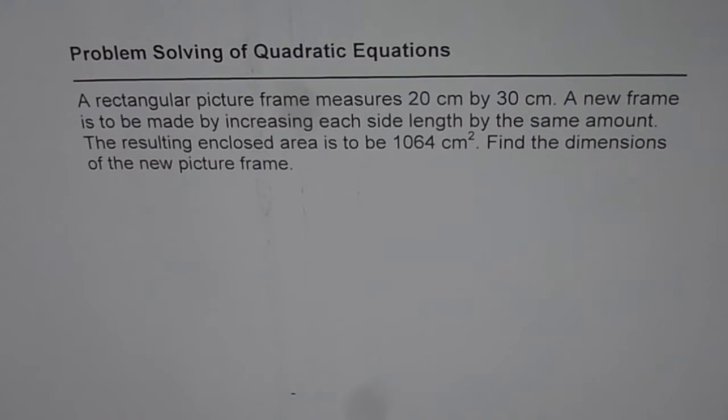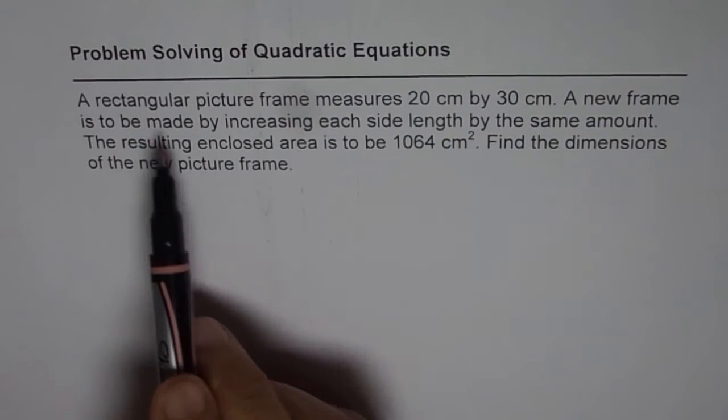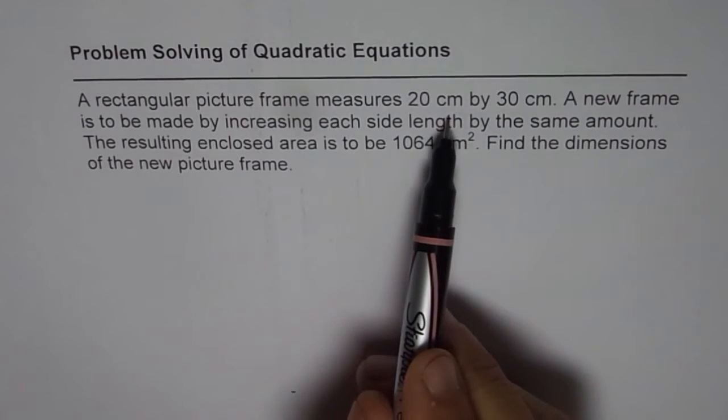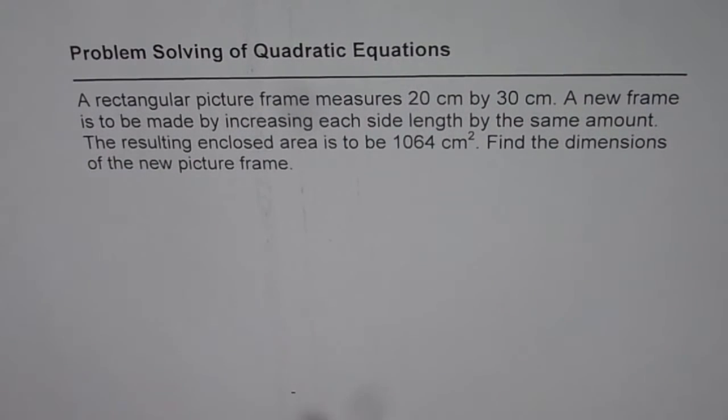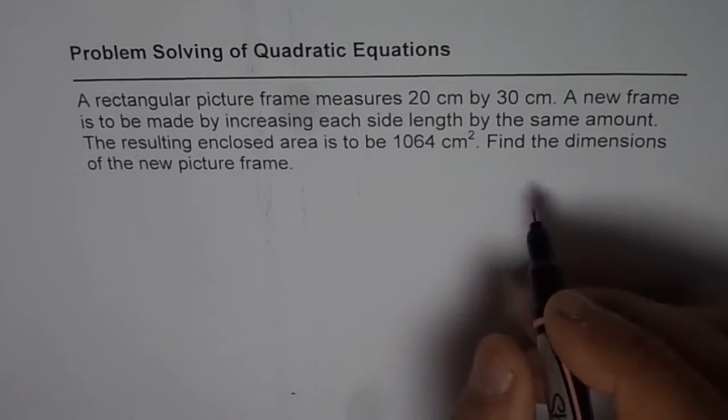I'm Anil Kumar and here is an application question where we are going to use quadratic equations to solve the problem. The question is: a rectangular picture frame measures 20 cm by 30 cm. A new frame is to be made by increasing each side length by the same amount. The resulting enclosed area is to be 1064 cm squared. Find the dimensions of the new picture frame.